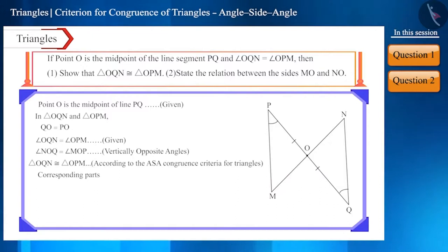Friends, we know that corresponding parts of congruent triangles are equal to each other. Therefore side MO is equal to side NO.